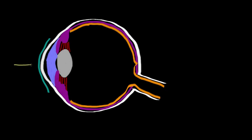A ray of light coming into the eye, the very first thing it'll hit is a transparent, one-cell-layer-thick epithelial sheet. This membrane covers the entire front of the eye, the white part of the eye, and the inside of your eyelids — it's known as the conjunctiva. The conjunctiva is important because it helps protect the eye from dust and helps moisturize the front of the eye. If it were to get inflamed or infected, it would cause something known as pink eye.